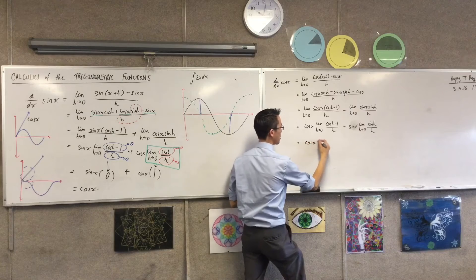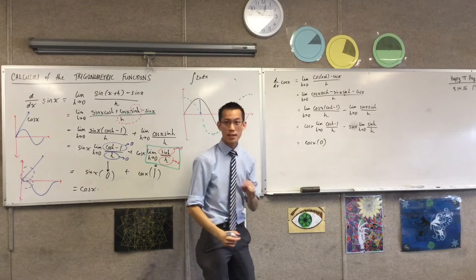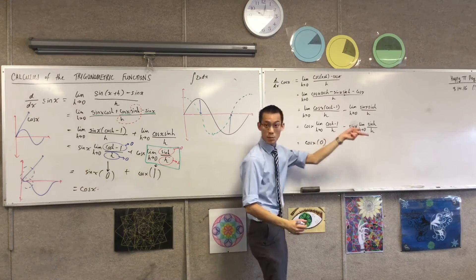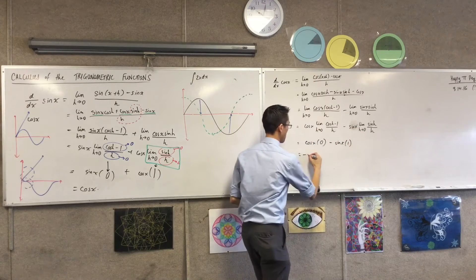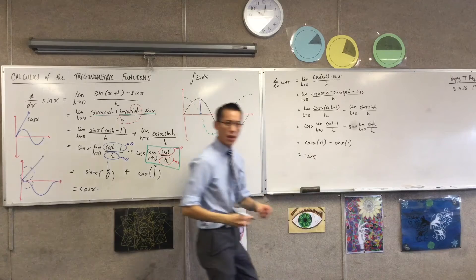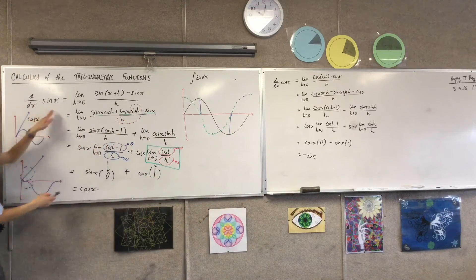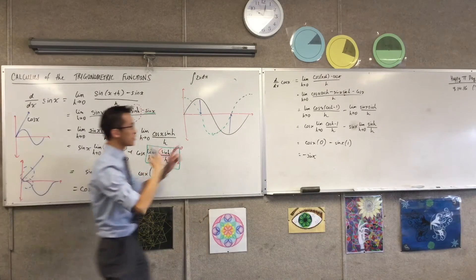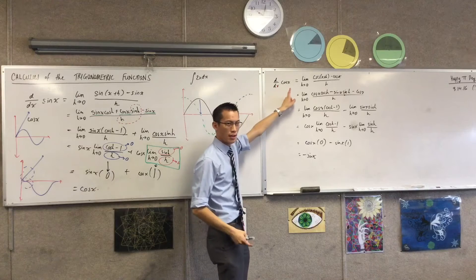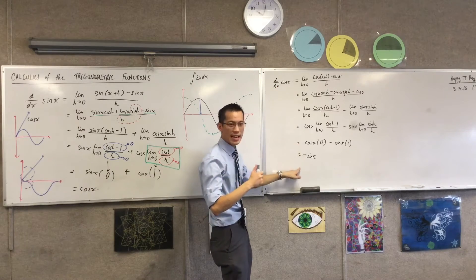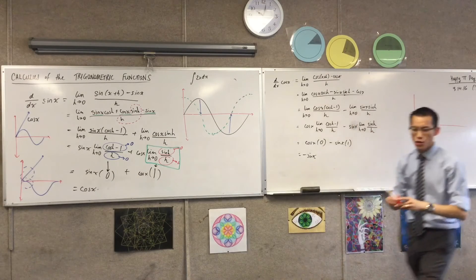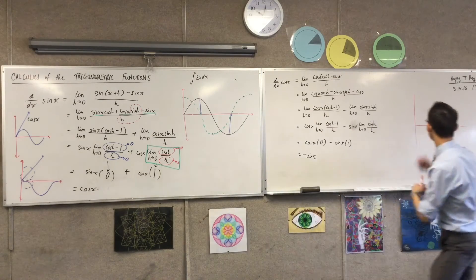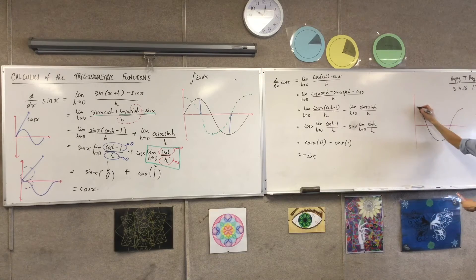So you're going to get cos x times zero take away sin x times one. Okay? So you can see all right you differentiate sine you get cosine. You differentiate cosine you don't get back to sine you get back to negative sine and of course it must be that way because when you have a look at this you think about what cosine looks like, right? Missed.